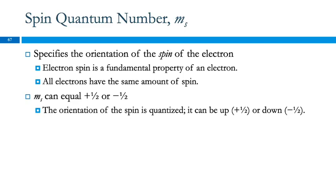The spin quantum number describes the spin of an electron. Electron spin is a fundamental property — all electrons have the same amount of spin, but the sign is different. It's not really like spinning clockwise and counterclockwise, but we can think of it that way. My kids used to play with Beyblade tops — some spin clockwise and some counterclockwise. We say the spin is either plus 1/2 or minus 1/2.